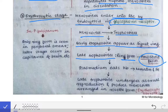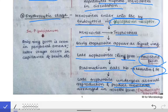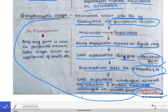The late trophozoite stage shows an amoeboid appearance with a vacuole inside the RBC, also called the ring form. The ring form of the early trophozoite stage is converted into the amoeboid form in the late trophozoite stage. The Plasmodium also digests the hemoglobin in the RBCs, converting it into hematin and iron. The late trophozoites undergo asexual reproduction and produce merozoites arranged in rosette form, forming the erythrocytic schizont inside the RBCs.